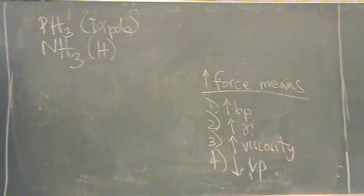So which one would have the highest vapor pressure? PH3. Which one? PH3. Yeah, this one would have the highest vapor pressure because it has the weakest force. This one would have the higher boiling point, surface tension, and viscosity. See how that works?